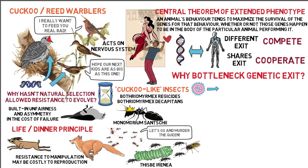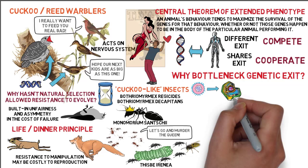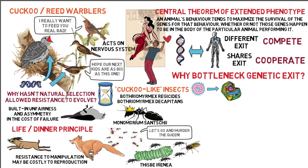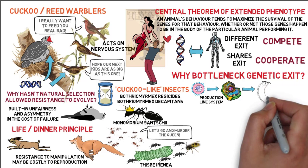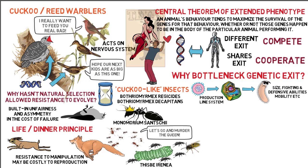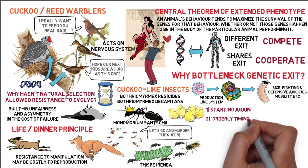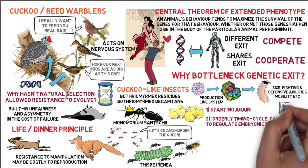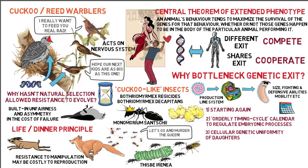Dawkins theorizes that initially replicators cooperated to form cells to facilitate the complex chemical processes for producing proteins. Cell walls and membranes were useful to keep chemical intermediaries together and acted as a production line system. Cells combined into multicellular organisms to better compete, differing in size, fighting or defensive abilities, mobility, etc. Our cells, for example, are clones of each other and contain the same genes, but different cells specialize or differentiate for different tasks. Bottlenecked reproduction firstly allows complex organs to arise from simpler ones by going back to the drawing board and starting again; secondly, provides an orderly timing cycle to regulate embryonic processes; and thirdly, in the event of mutations, allows more cellular genetic uniformity of daughters given a common ancestor than other reproductive processes like budding.